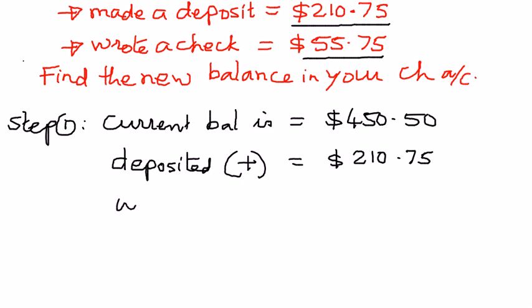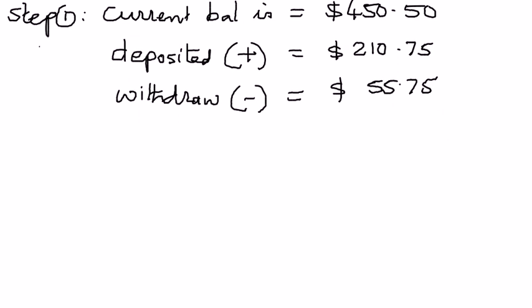And then we wrote out a check. That means we are withdrawing. Withdrawing means we are subtracting. So we are withdrawing $55.75. So this is the way we want to process this information. And once we have this information processed, we want to be able to simplify that.